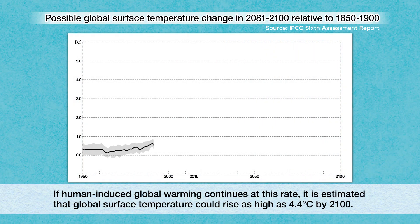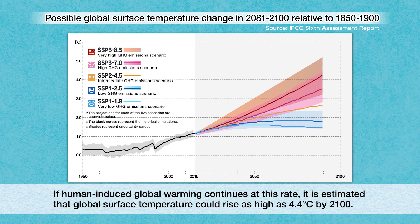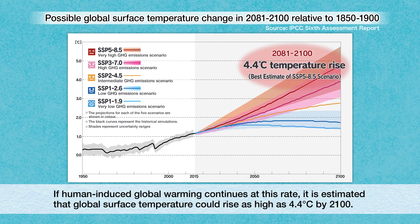If human-induced global warming continues at this rate, it is estimated that global surface temperature could rise as high as 4.4 degrees by 2100.